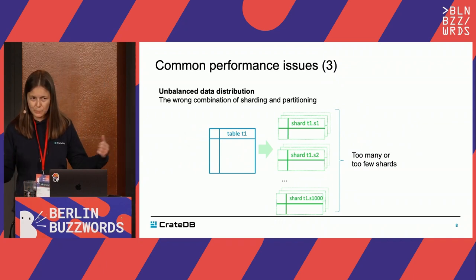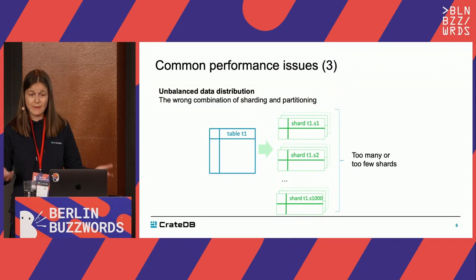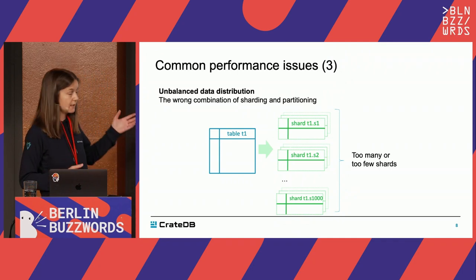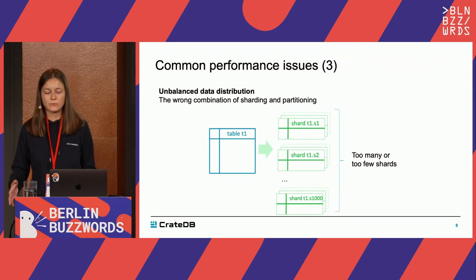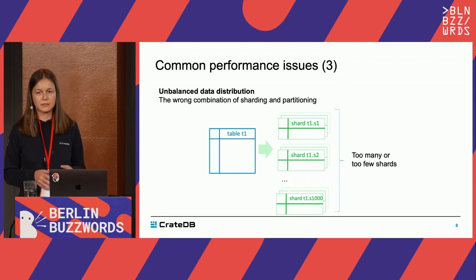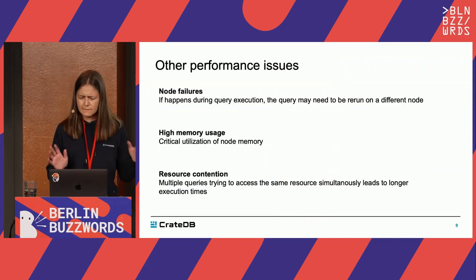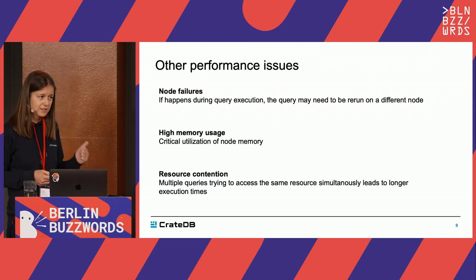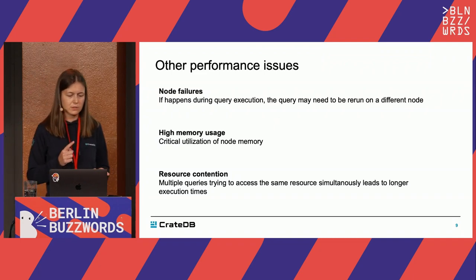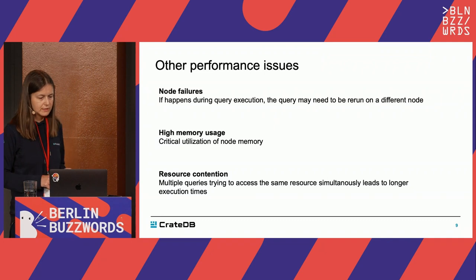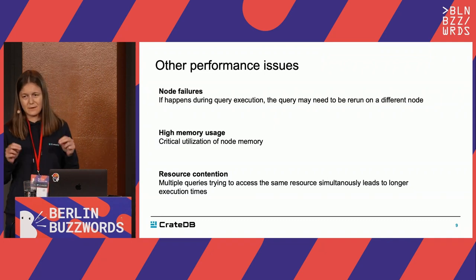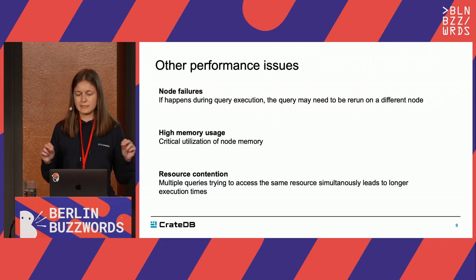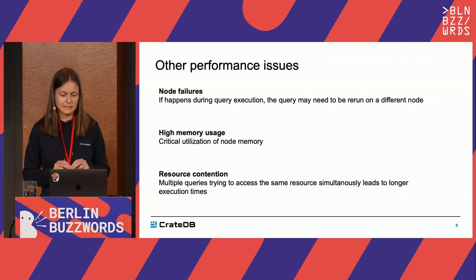Because we need to reason about data distribution, we may end up designing a system with unbalanced data distribution. For example, we can have the wrong combination of sharding and partitioning, ending up with too many or too few shards, which actually hinders the performance properties of a distributed database. We also need to think about node failures and recovery time, memory usage per node, and whether we have too many concurrent requests — situations such as resource contention. These are problems we see on a daily basis and are worth mentioning.